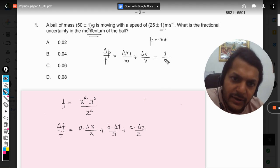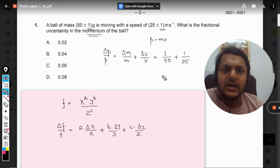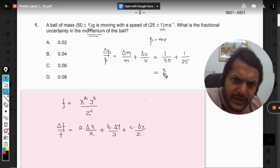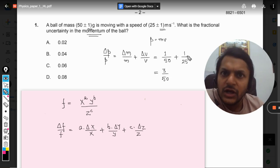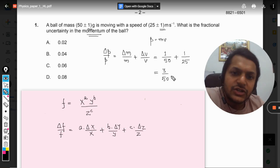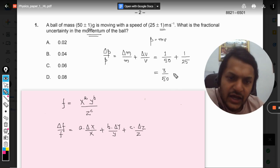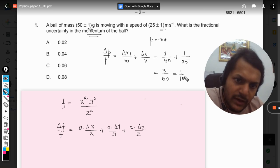As per Δm/m is concerned, it will be 1 divided by 50 plus this will be 1 divided by 25. So on taking LCM, you would be getting the value 3 by 50. You multiply 2 up and down here and then you take the LCM, it will be 3 by 50.